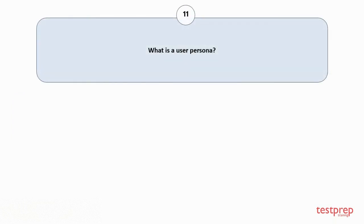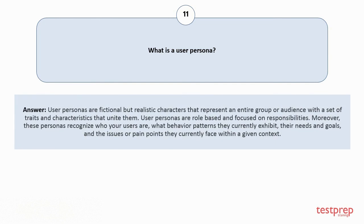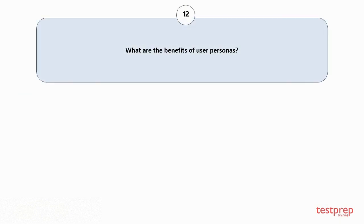Question number eleven: What is a user persona? User personas are fictional but realistic characters that represent an entire group or audience with a set of traits and characteristics that unite them. User personas are role-based and focused on responsibilities. These personas recognize who your users are, what behavior patterns they currently exhibit, their needs and goals, and the issues or pain points they currently face within a given context.